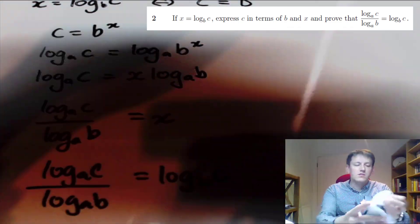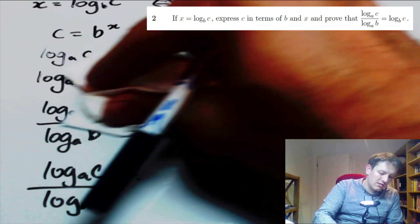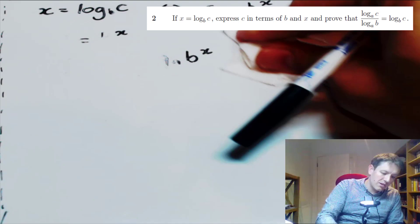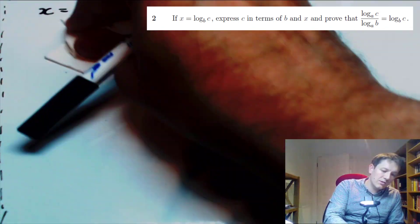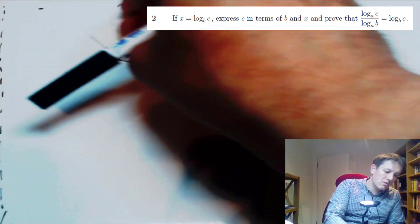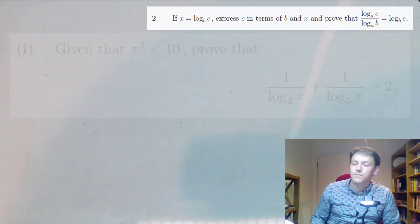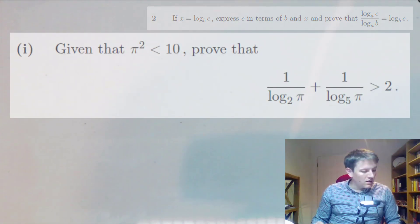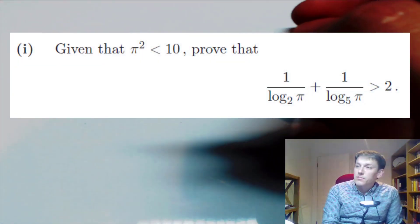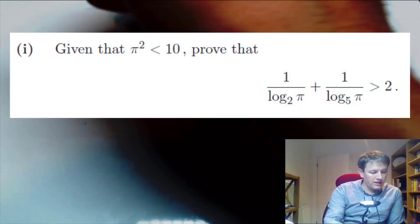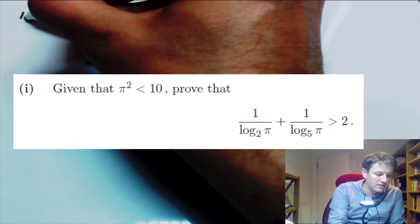So the first part is just a little bit of bookwork, or you could work it out as you go along if you don't know it for sure. Now part one is really where the hints start coming thick and fast.